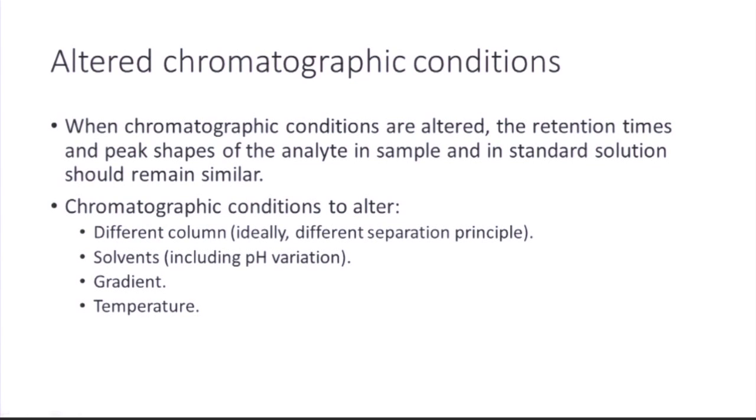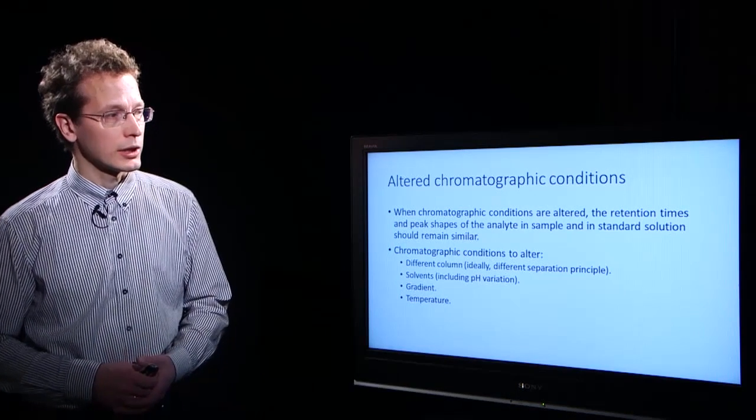Chromatographic conditions which can be altered are columns, and ideally different chemistry of columns is used. Then we can make a change in solvents, and one powerful variation can be pH change of solvent. And gradient steepness and temperature can also be changed.